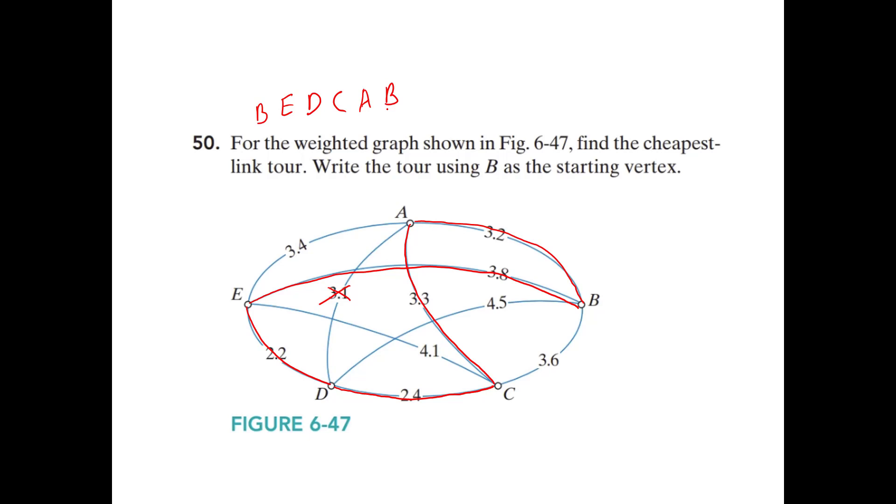You could write the tour backwards and write B, A, C, D, E, B. Same tour.